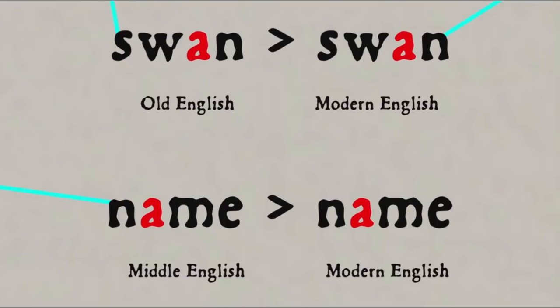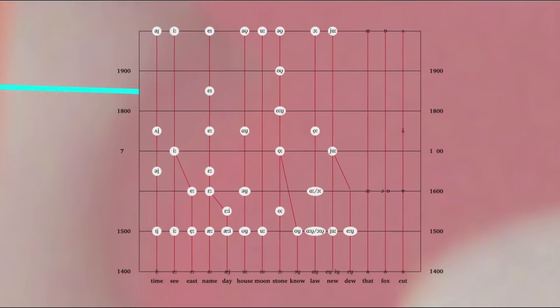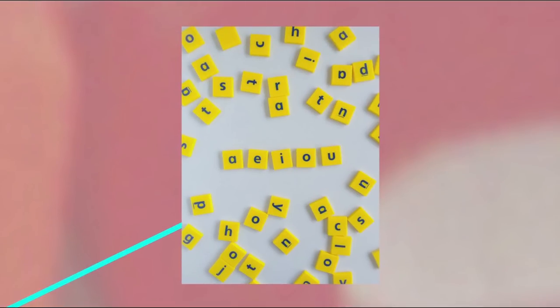So the short a in swan remains basically the same from Old English to Modern English, but the long a in Middle English nama became name in Modern English. This sound change is called the Great Vowel Shift because it affected the whole system of long vowels, with each vowel in turn moving in its position in the mouth. So A became A, A became E, E eventually became I, and so forth. And that's why today we often say to children learning to spell that the long vowels say their name: A, E, I, O, U.